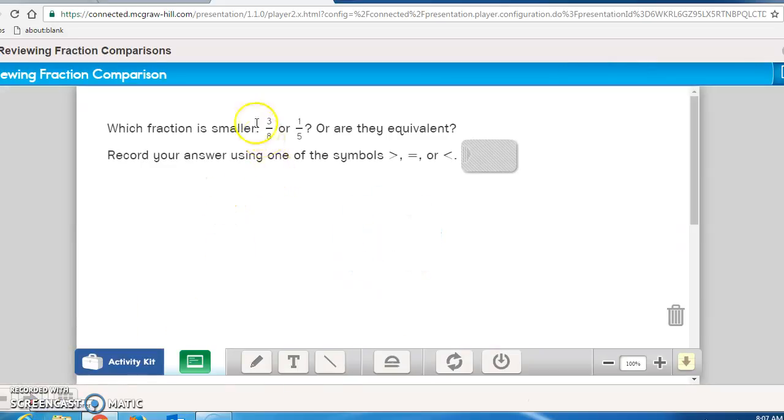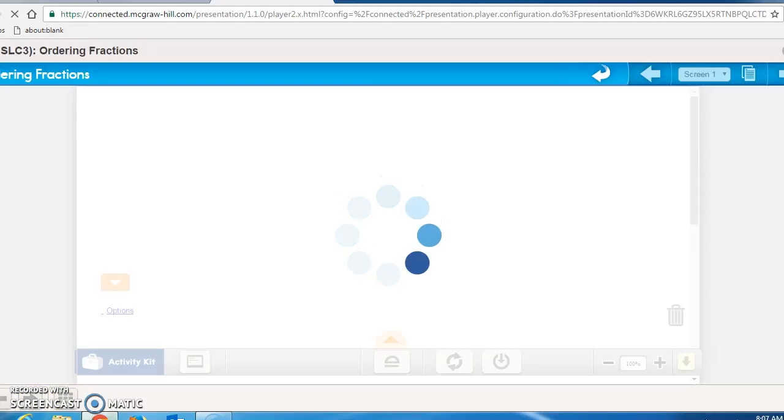So again, which fraction was smaller, 1 eighth or 3 eighths? 1 fifth was smaller, was less than 3 eighths.